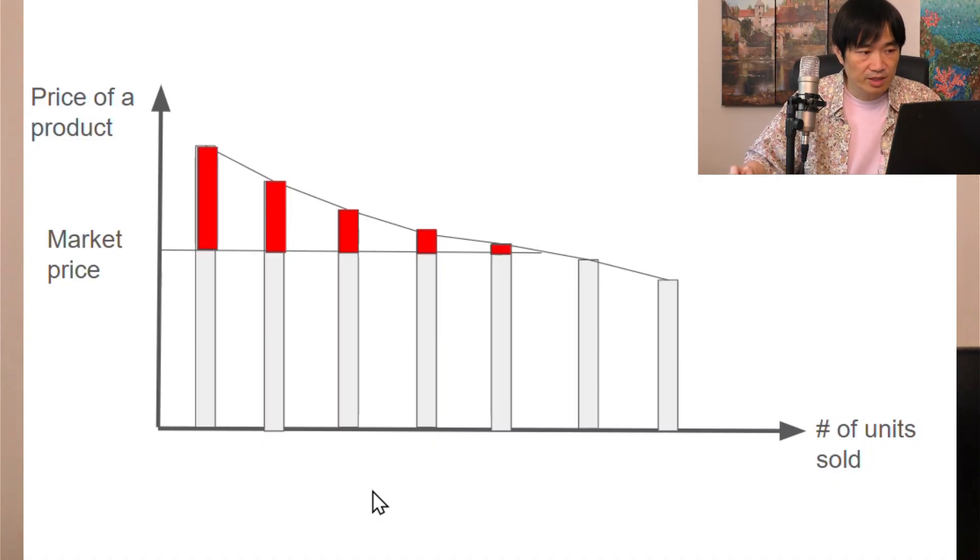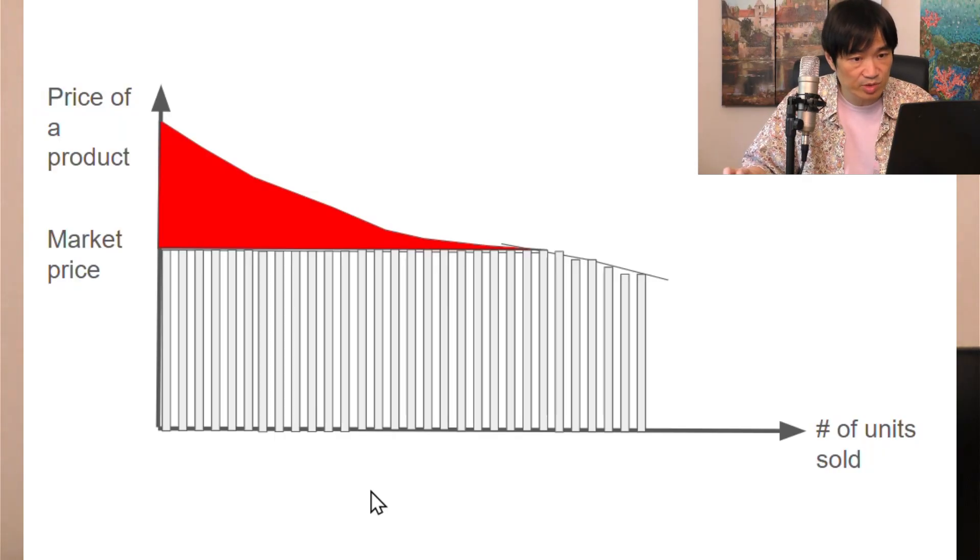Again, if we have thousands or even millions of customers, these bars will be close together. And the area of this shape, this red shape, will be the entire consumer surplus.